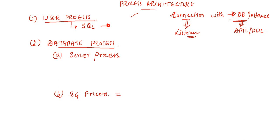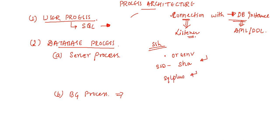The next topic is about the background process. Background processes are started when an Oracle instance is started. Whenever you login to the database server with the help of SSH connectivity and you have set the environment of some database instance - it will ask for the SID, database name or instance name. Then you use the SQL Plus utility tool, and it will ask for a username. You feed the user like sysdba, because sys is a super user with the authority to start and stop your database instance.